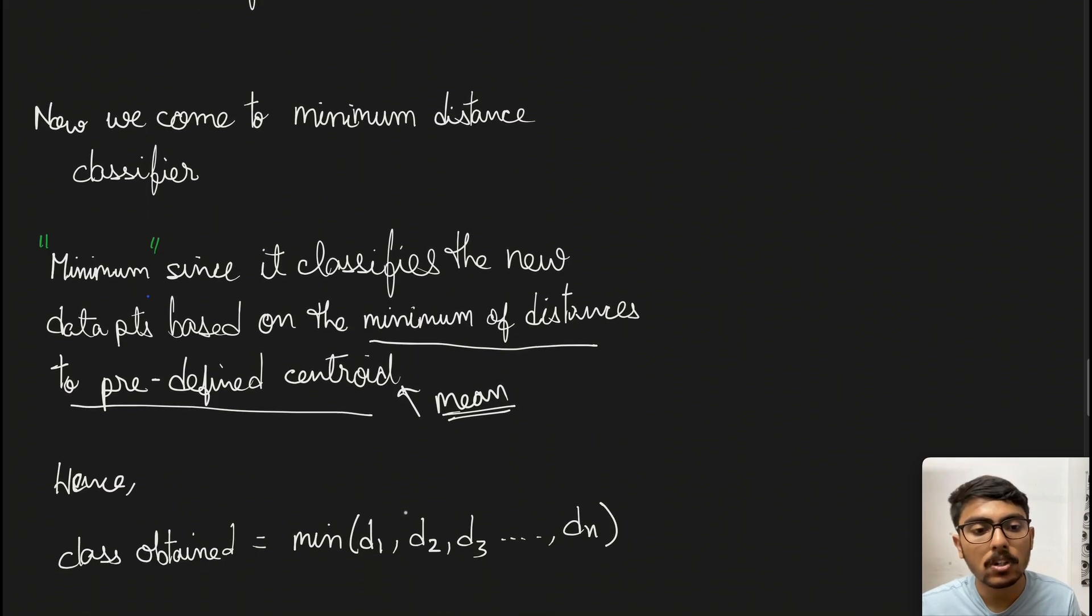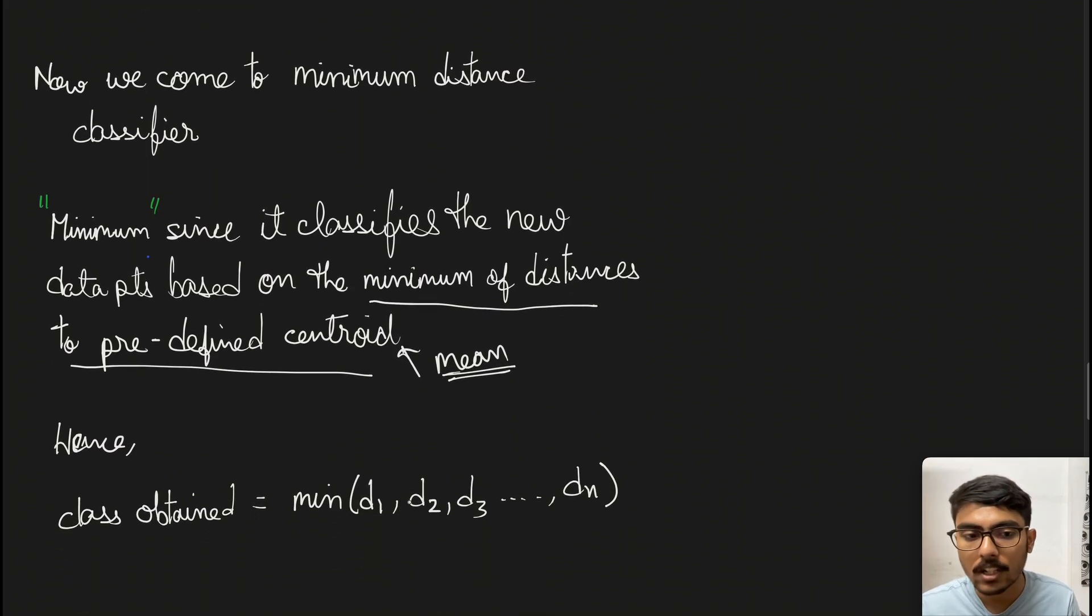Mathematically, we can say the class obtained will be the minimum of d1, d2, d3 up to dn. These are the distances from the centroids of the classes, the pattern classes. Among these, whichever is minimum - suppose d3 is minimum - the class will be c3.